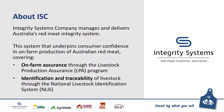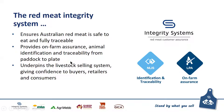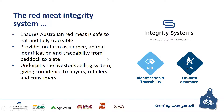Integrity Systems Company manages and delivers Australia's red meat integrity system, which underpins consumer confidence in on-farm production of Australian red meat. It covers on-farm assurance through the Livestock Production Assurance Program or LPA, and identification and traceability through the National Livestock Identification System or NLIS. ISC works collaboratively with government and industry, primarily through the Safe Meat framework, to deliver these world-leading traceability and assurance programs. The Australian red meat industry is now a $28 billion industry, employing 400,000 people across 80,000 businesses and delivering product to 100 global markets.